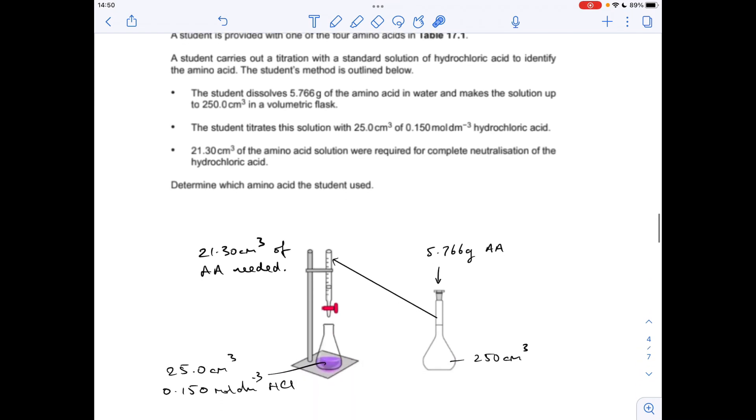Like I always do, I've got these little diagrams with all the information on just to try and make sense of what's happened. They've taken a known mass of alpha amino acid, dissolved it in a 250 cm3 volumetric flask, then put it into the burette and titrated it against 25 cm3 samples of that concentration HCl. They've established a mean titre of 21.3 cm3 of amino acid to neutralise the acid.